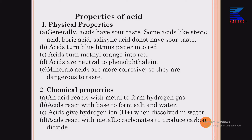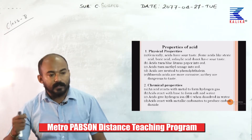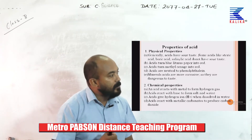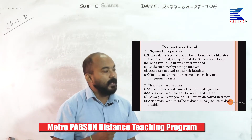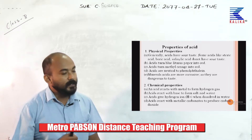Mineral acids are corrosive, meaning they are dangerous to taste. There are two types of acids based on their source: organic and inorganic acids. Organic acids are obtained from plant or animal sources, whereas inorganic acids are synthesized in a lab or obtained from minerals — for example, HCl and H₂SO₄ are mineral acids.